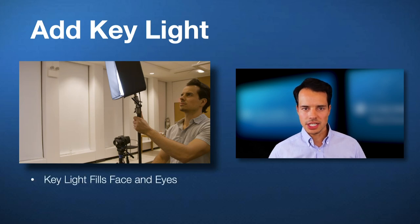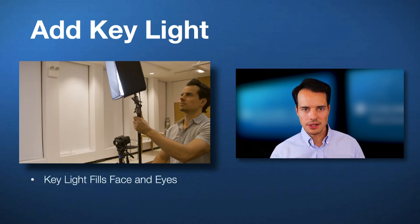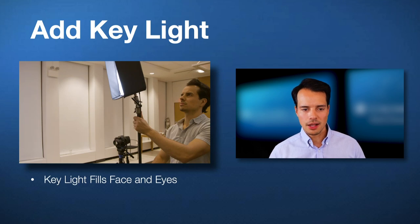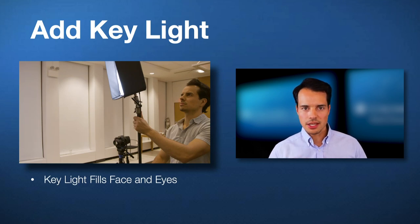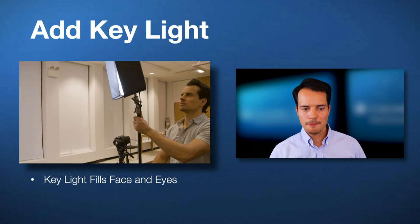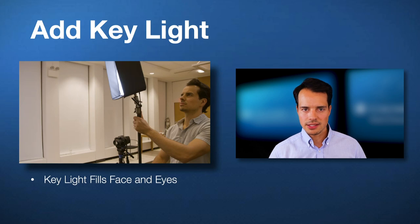The key light is the main light that goes on the interview subject — it fills in their eyes and their face. You're going to want to make sure it's in a good position, far enough away from them so that it softens a bit. This is our main light that we're adding into the scene.